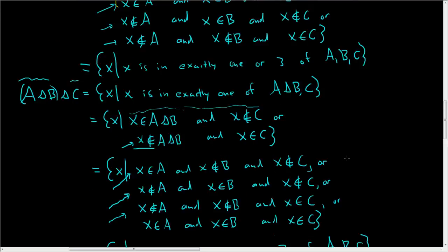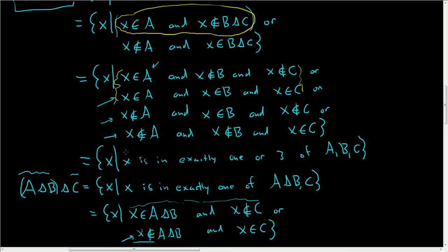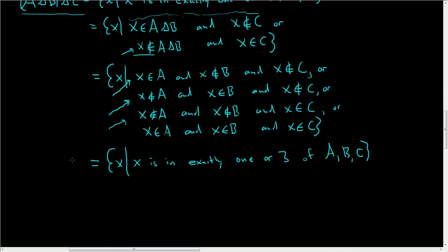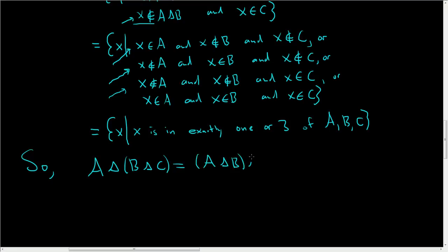When we started the problem, we showed that A△(B△C) is the set of all X such that X is in exactly one or three of A, B, C. Then we looked at it the other way — (A△B)△C — and got the same thing: X is in exactly one or three of A, B, C. So we showed that A△(B△C) equals (A△B)△C. Thus, the symmetric difference is associative on the power set of a set.